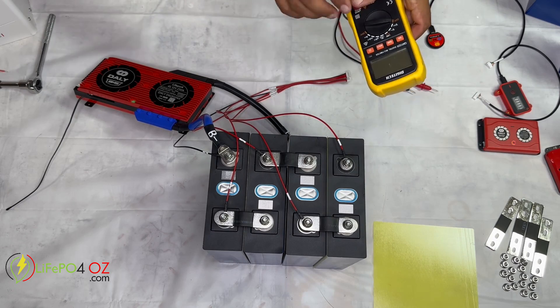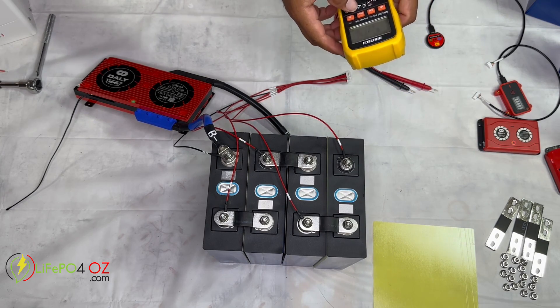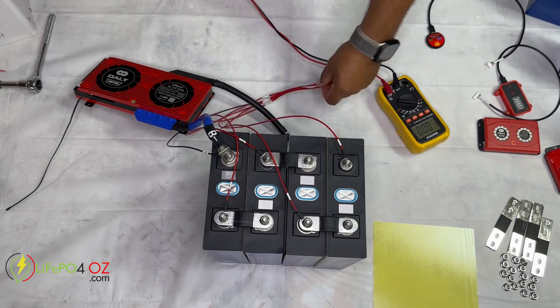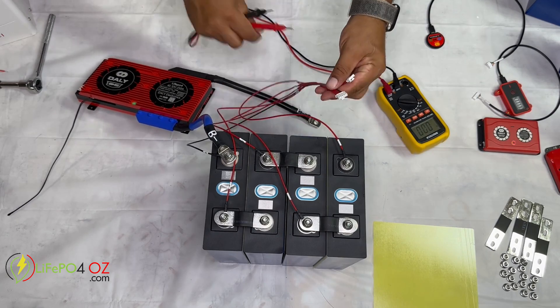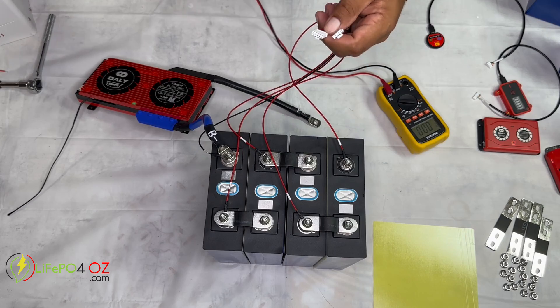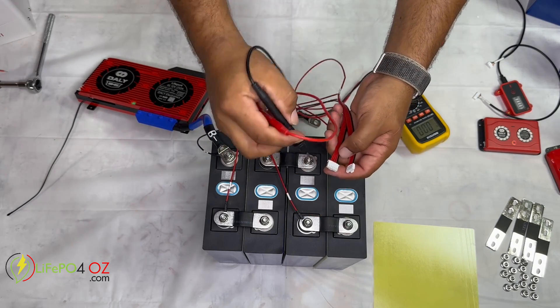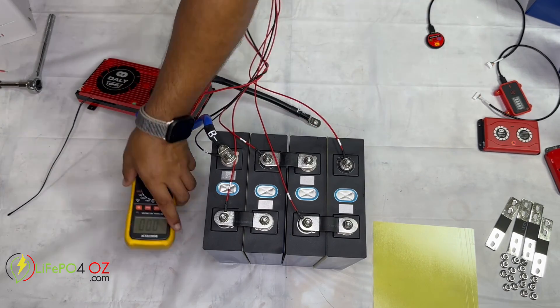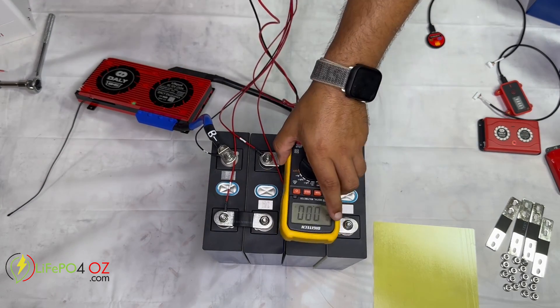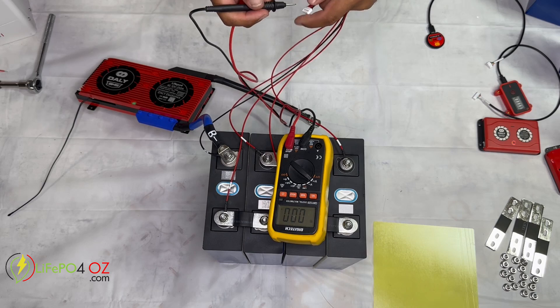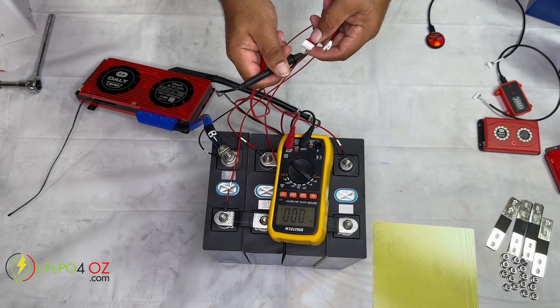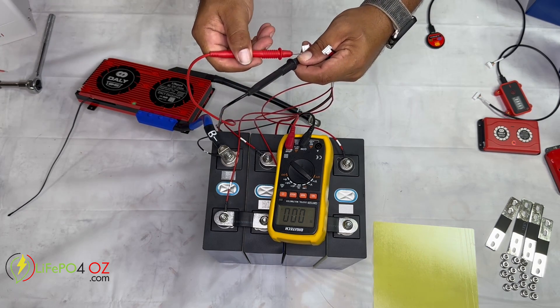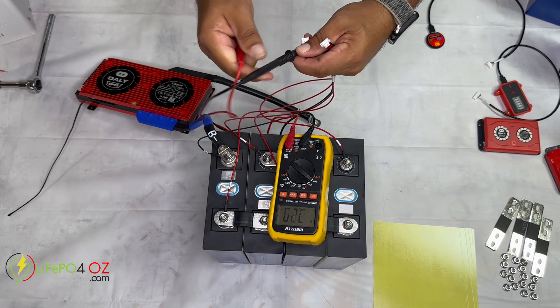Once you've got those in place, go and grab your multimeter. Put it on your DC setting, and hopefully you can see that. And then what you do is you go and you get your balance wires. You grab your balance wires, put the black one on the black terminal like so if you can see that. And then I put the red one on the next, on the first red one, and it gives me a reading 3.29. I go to the next one, 3.2.